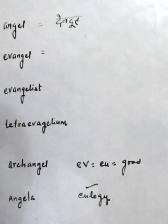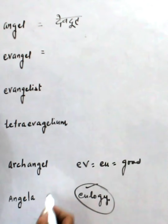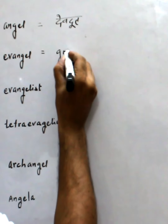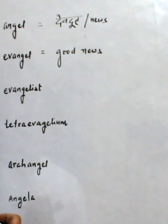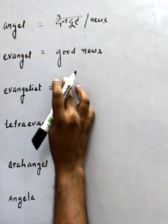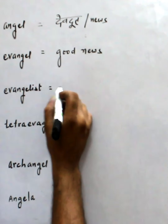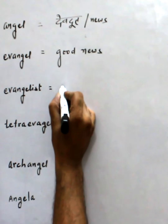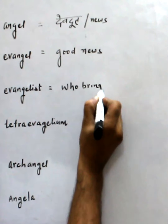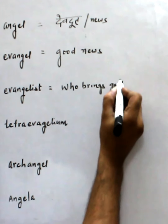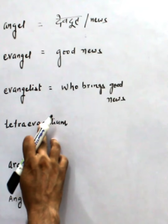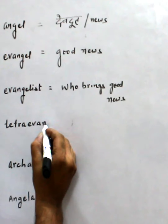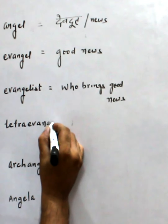Eulogy means good study, that is its meaning — good. Good news. We can also say news here. So Evangelium means who brings the good news. Evangelist means who brings good news. Ev + Angelium.